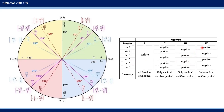Finally, if the angle lies in the fourth quadrant where x is positive and y is negative, then cosine will be positive, sine will be negative, tangent will also be negative, secant will be positive, and cosecant and cotangent will be negative.